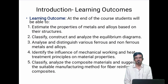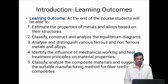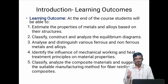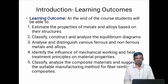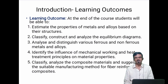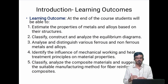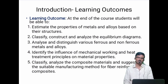The learning outcomes are what students are able to learn at the end of the course: estimate the properties of materials based on their structural properties; classify, construct and analyze the equilibrium diagrams; enhance and distinguish various ferrous and non-ferrous materials; identify the influence of mechanical working and heat treatment principles on material properties; and classify and analyze composite materials and suggest a suitable manufacturing method for fiber-reinforced composite materials.